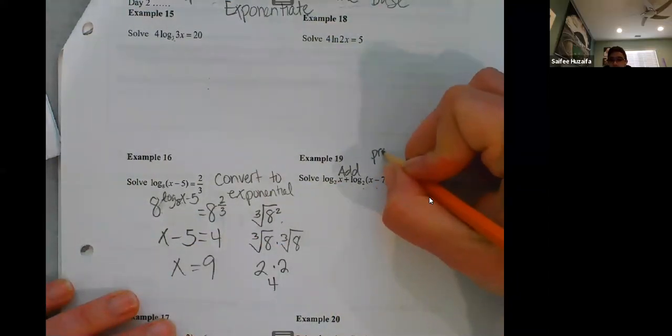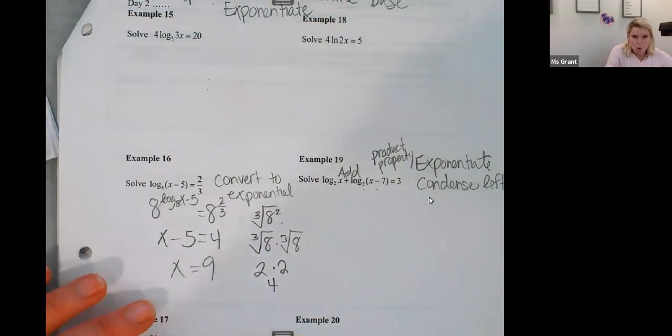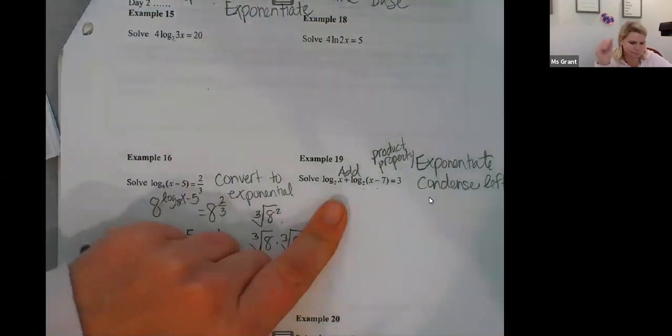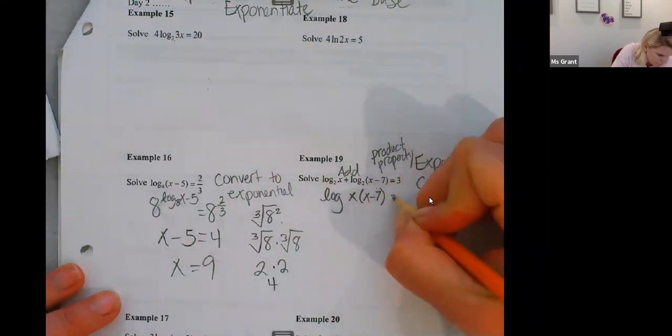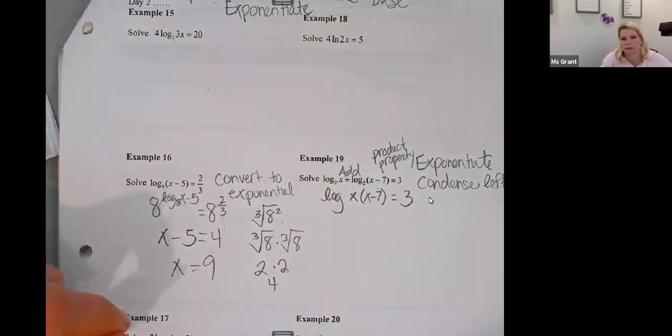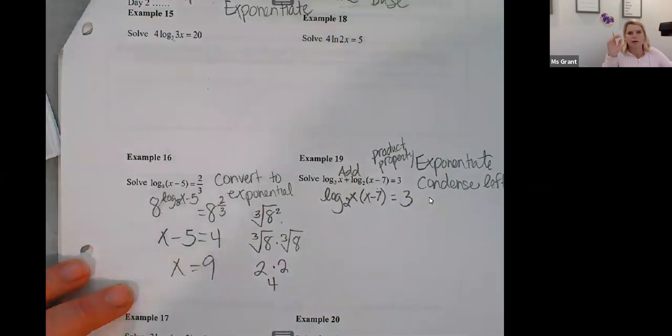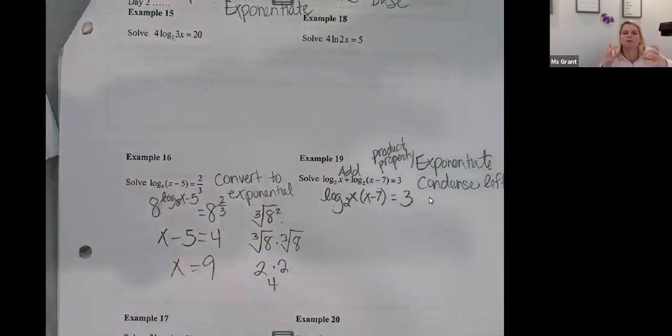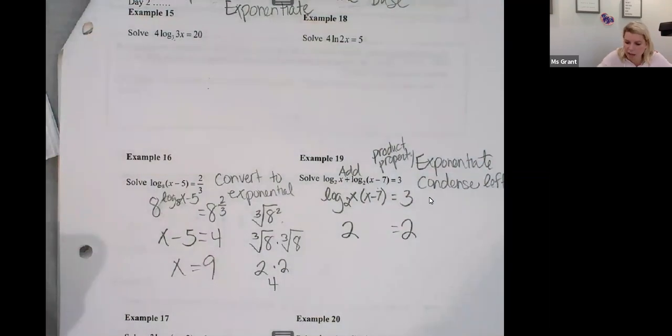Oh, sorry. I started saying it. I couldn't wait. Product property, which means this has a base two. So first let's write it as x times x minus seven. Okay. The addition problem means that I'm multiplying. So now raise it because it's base two. Raise. Okay. Use two as my base and raise the, the exponents will be the power of that two. Two is going to be my base. Two to the something equals two to the something. And what are my exponents? Well, they're the things here.